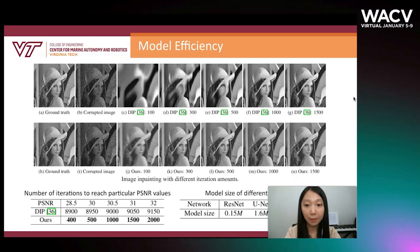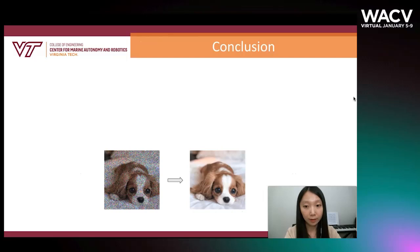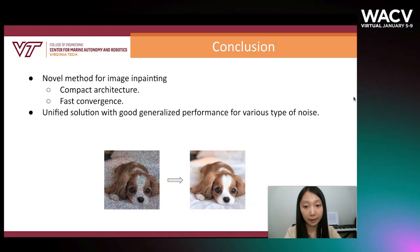In conclusion, we proposed a novel method for image inpainting which has a compact structure and fast convergence from the beginning of training. Unlike other methods, our method is robust to various types of noise without any pre-training. For more details, please read the paper or get in touch with us. Thank you very much.